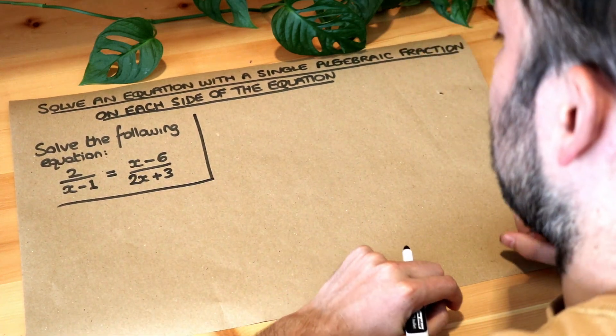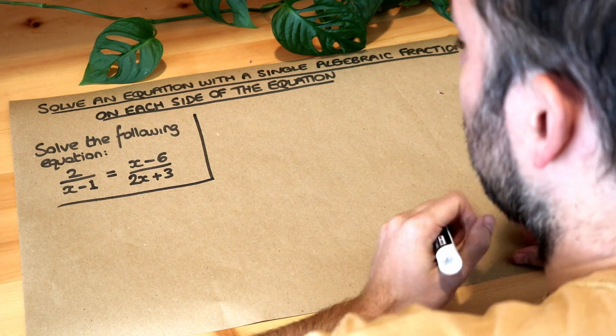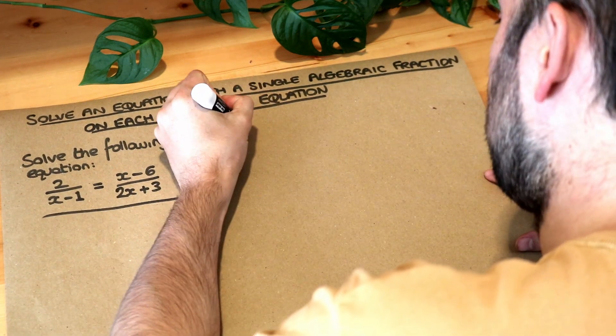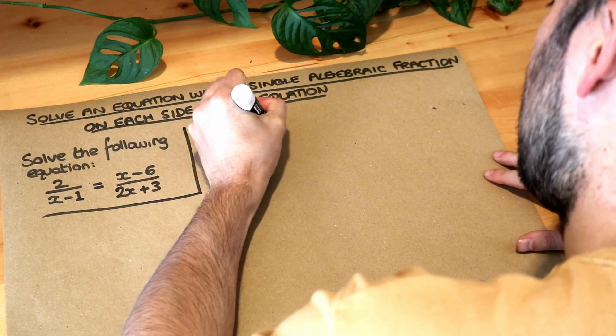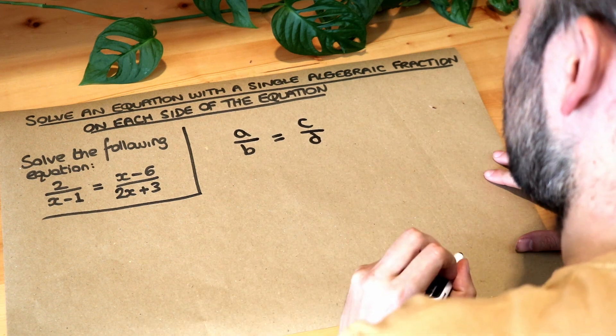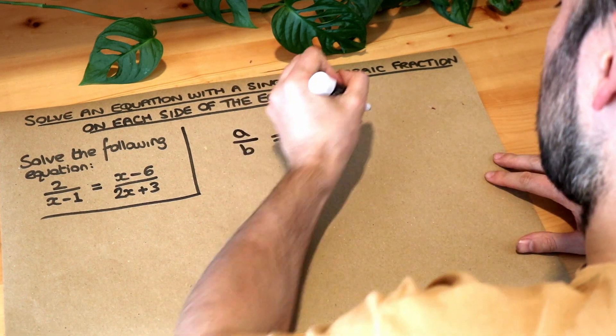So this one is a bit harder than the previous video on solving algebraic fraction equations. Now to save you time I'm going to show you a quick mathematical technique. If you had a over b is equal to c over d then we can use something called cross multiplication.